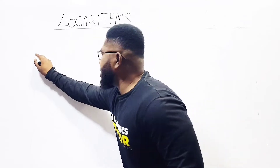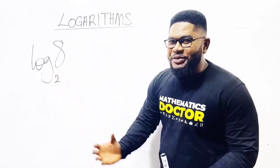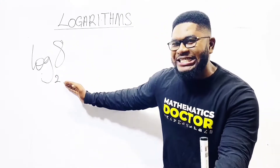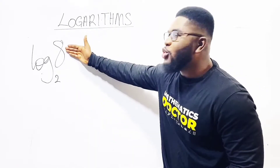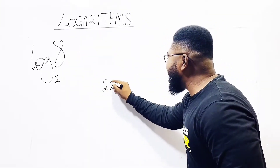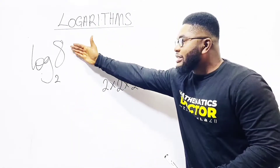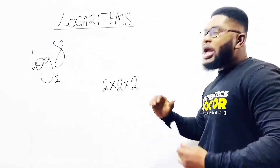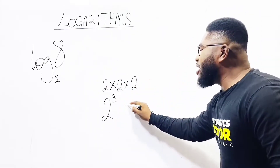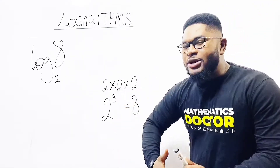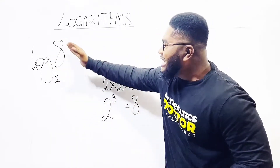Let us take log 8 base 2. Please, calm down and get the understanding. Once I see logarithm, something simple must happen here — the base must be the target to get the final answer. How many times must base 2 multiply itself to produce the value of 8? It will be 2 times 2 times 2. So: 2 times 2 is 4, times 2 is 8. Let's count the number of times: 1, 2, 3. Meaning the base 2 must be raised to the power of 3 to get 8. So finally, log 8 base 2 equals 3.